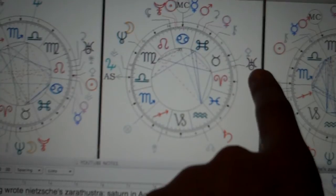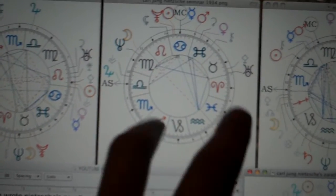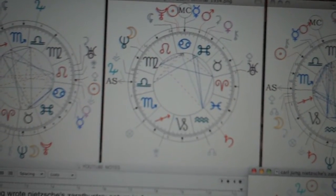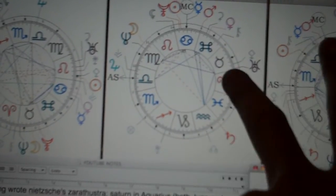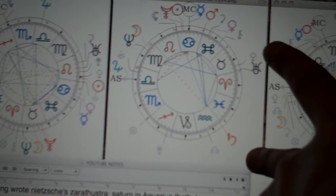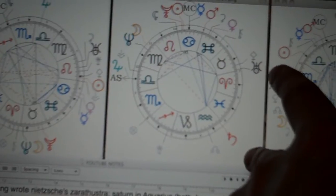And Uranus was in Aries, just like when Nietzsche was born. So Nietzsche would also be having a Uranus return. Those two huge archetypes, Saturn and Uranus, are the exact placements when Nietzsche was born, when Jung began this analysis.